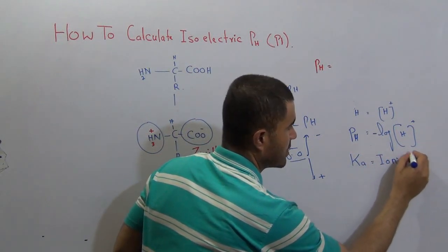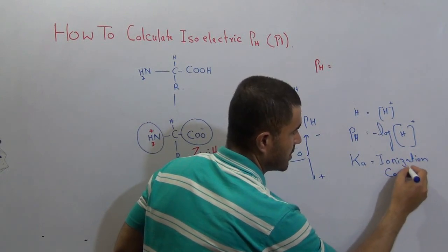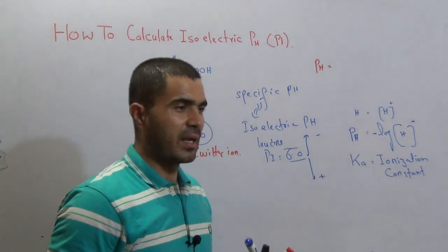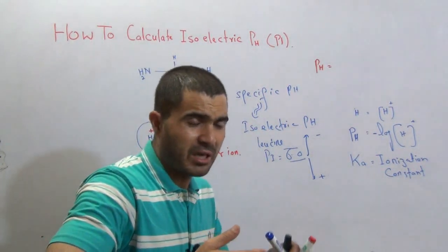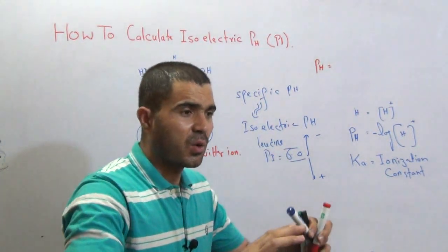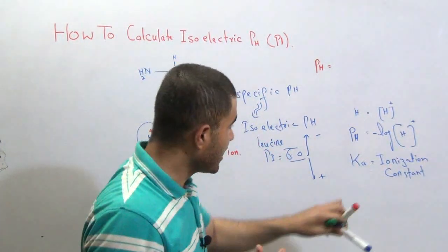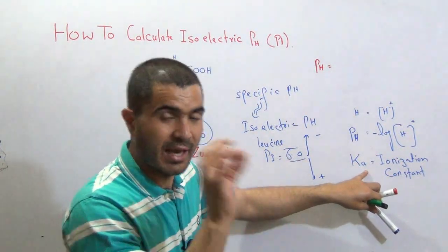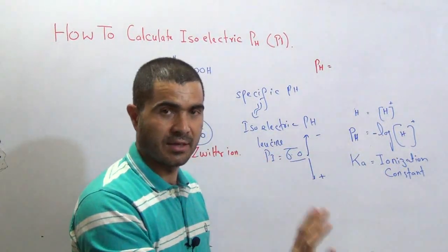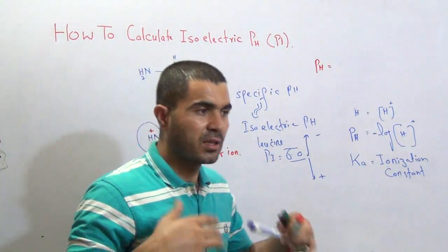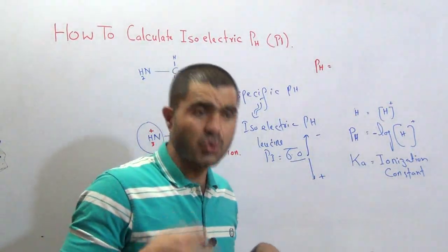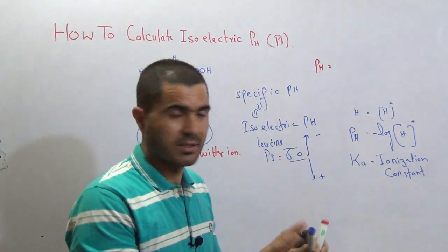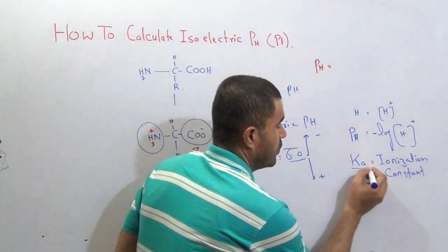Similarly, there is another term called Ka. Ka stands for ionization constant. Every ionizable species — whether negatively or positively charged — once it becomes ionized, it acquires a constant value, and that value is called the ionization constant. Every ionizable species has this value, and these values are already given to us.